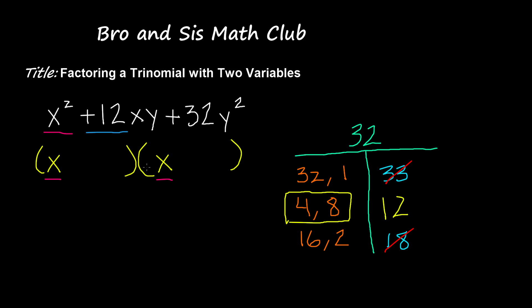So when multiplied, 4 times 8 gives us 32. And when added, 4 plus 8 gives us 12. So I'm going to put plus 4 and plus 8.